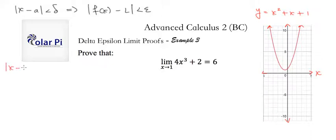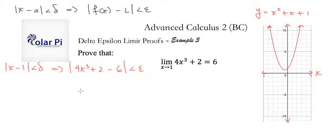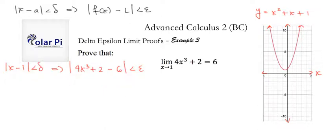So adopting this to our situation, we require that whenever x minus 1 is less than delta, that we have the absolute value of 4x cubed plus 2 minus 6 — that is, f of x minus L — be less than epsilon. The way we're going to create this implication is by manipulating this and figuring out a nice relationship between delta and epsilon, which often involves getting a factor of absolute value of x minus 1 less than something.